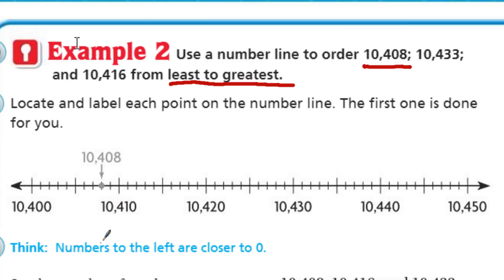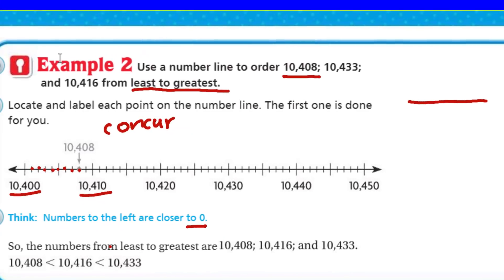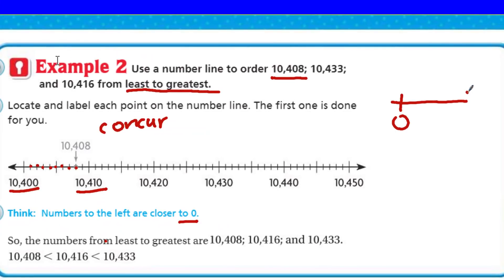Locate and label each point on the number line. The first one is done for you. So, we have ten thousand four hundred eight. That one was done. Right here. How'd they know it was that spot? They have ten thousand four hundred here. They have ten thousand four hundred ten here. The difference is ten here. See? We go one, two, three, four, five, six, seven, eight. Eight. There it is.